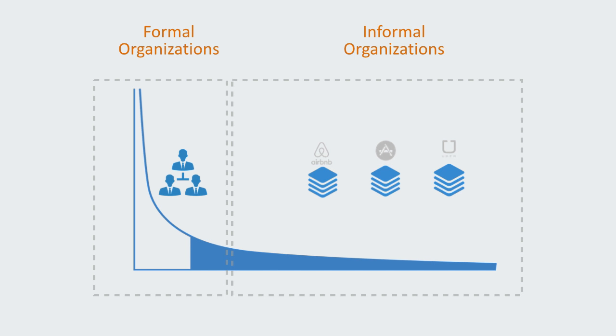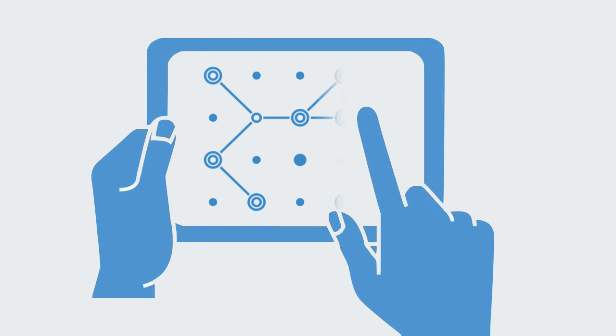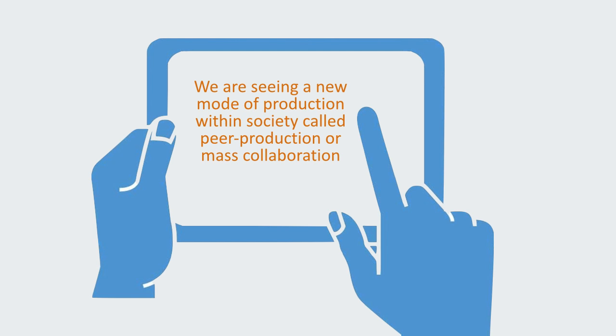These networked platforms are instead able to harness the small, but combined, vast productive capability of the so-called crowd or long tail. The mass of people, that were previously not productive enough to organize formally, are now able to set up their own networks of collaboration, and out of this, we're seeing a new mode of production within society, sometimes called peer production or mass collaboration, classical examples being Wikipedia or the Linux Foundation, a much more dynamic and swarm-like form of organization.